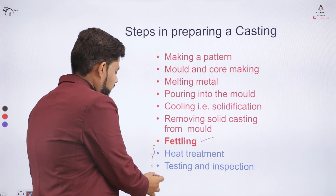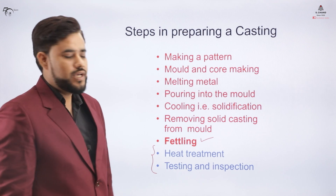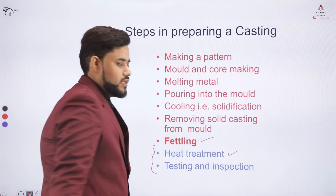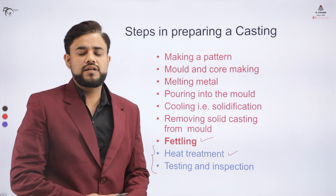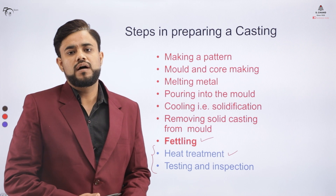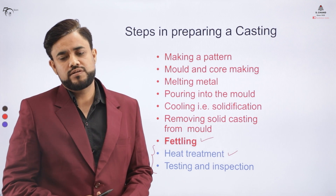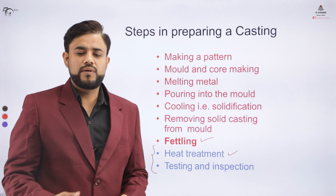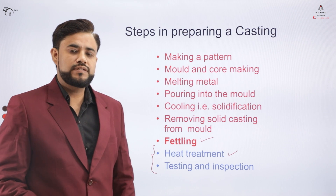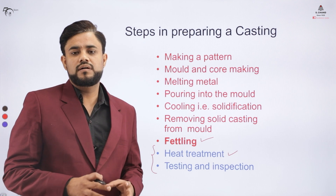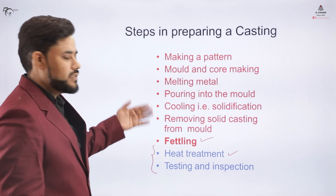The next step in the casting process is heat treatment. We have several heat treatment processes used to increase the properties of the material — for example, hardening, tempering, quenching, and normalizing. These heat treatment processes are done on the final part to enhance its properties.